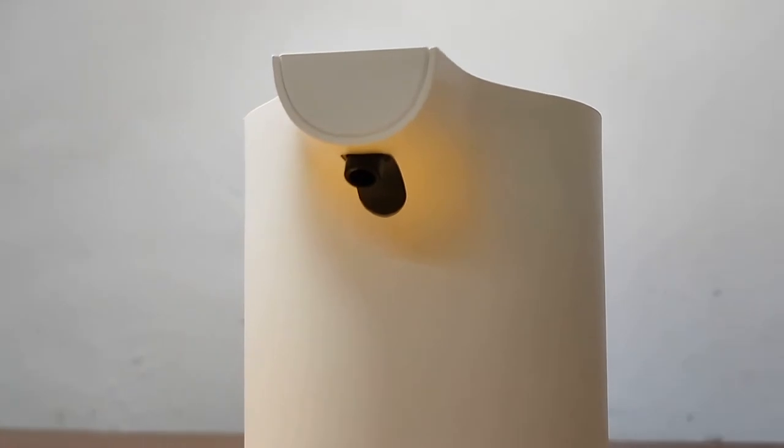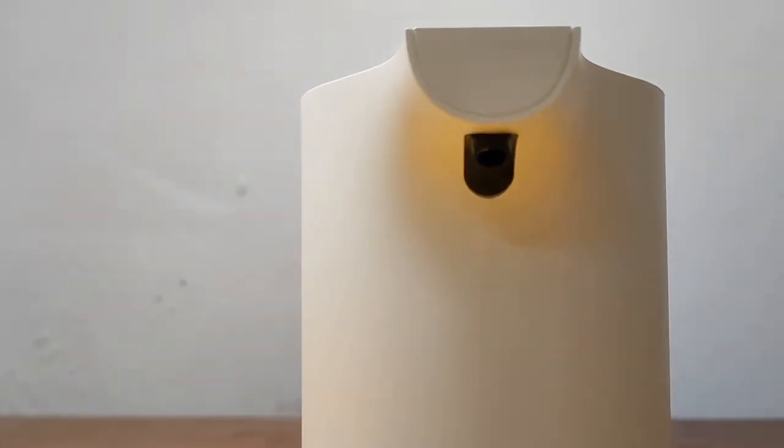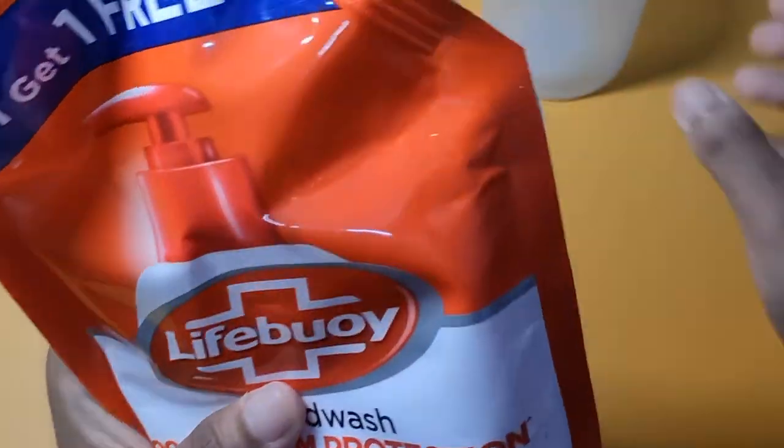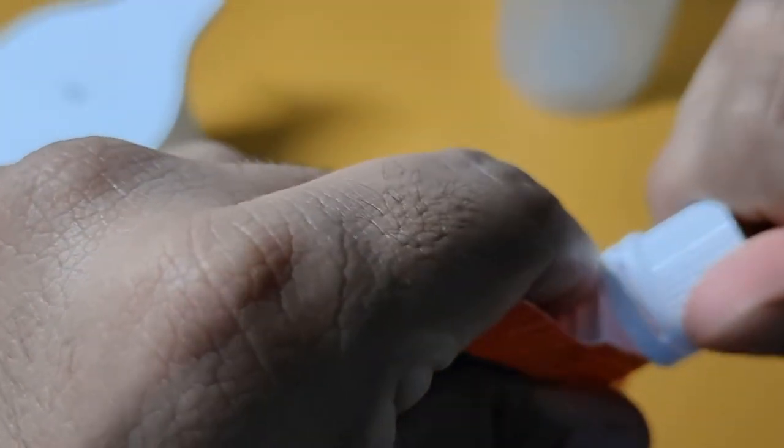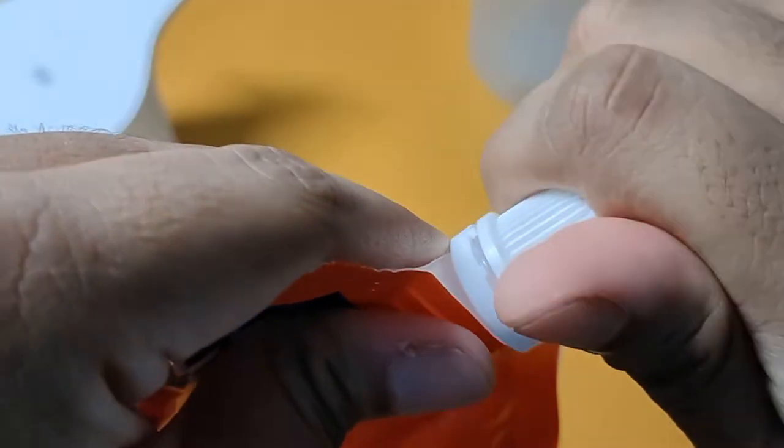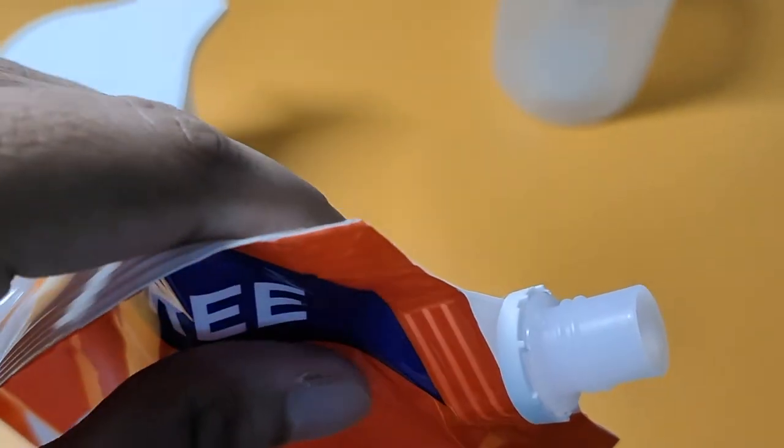Now what we are going to do is pour this Lifebuoy hand wash soap foam into this bottle. I already had this hand wash in my home. Doesn't matter which one you have, you can use any types of liquid hand wash.